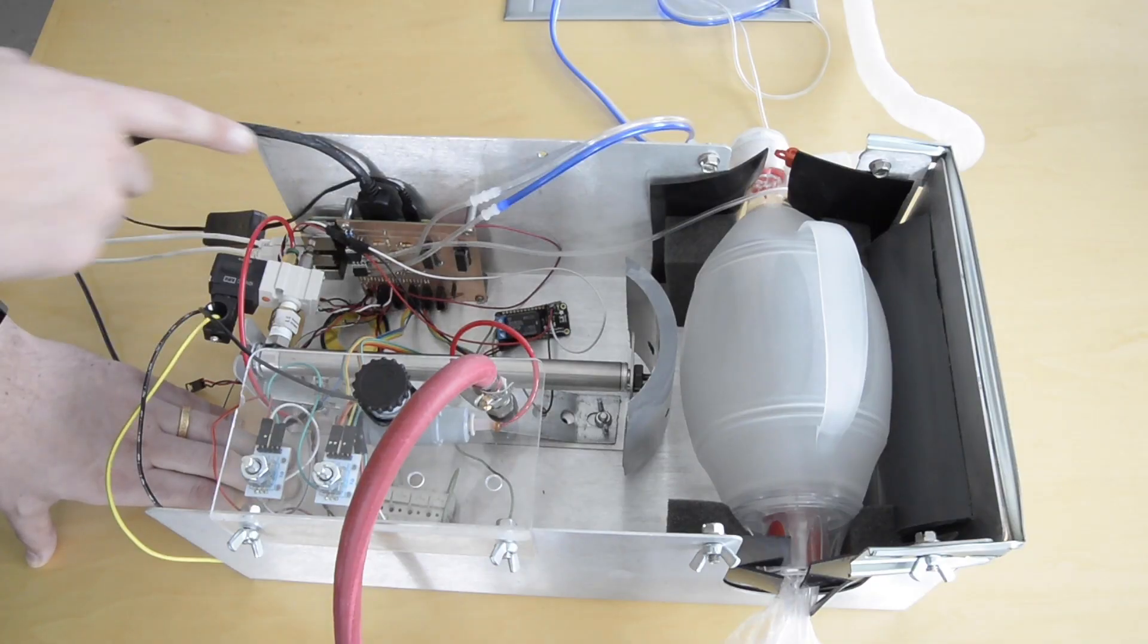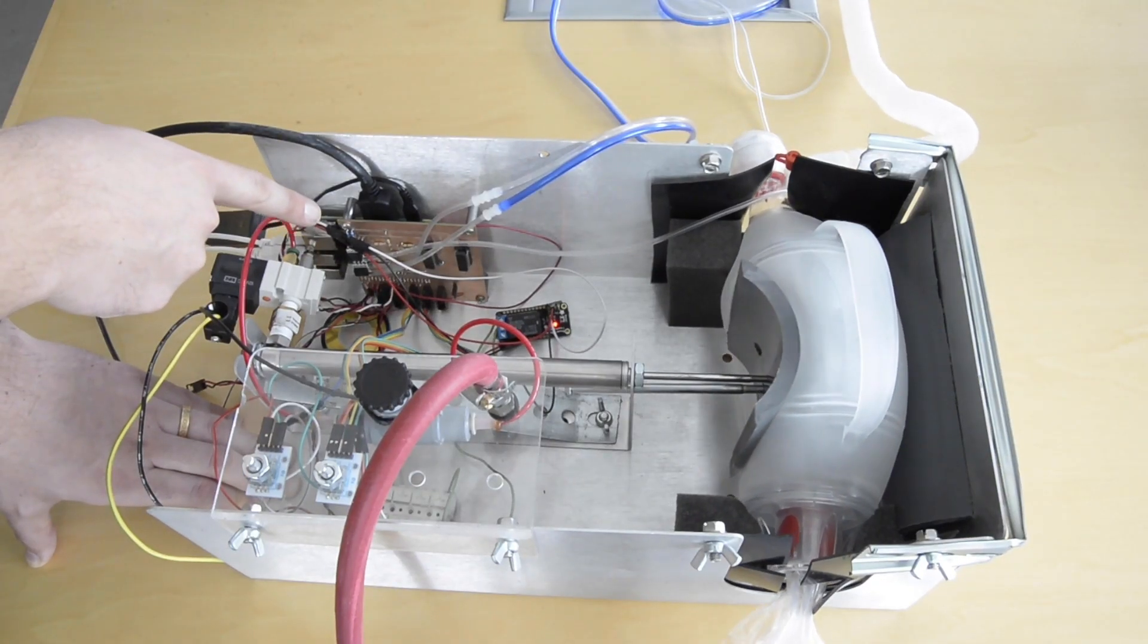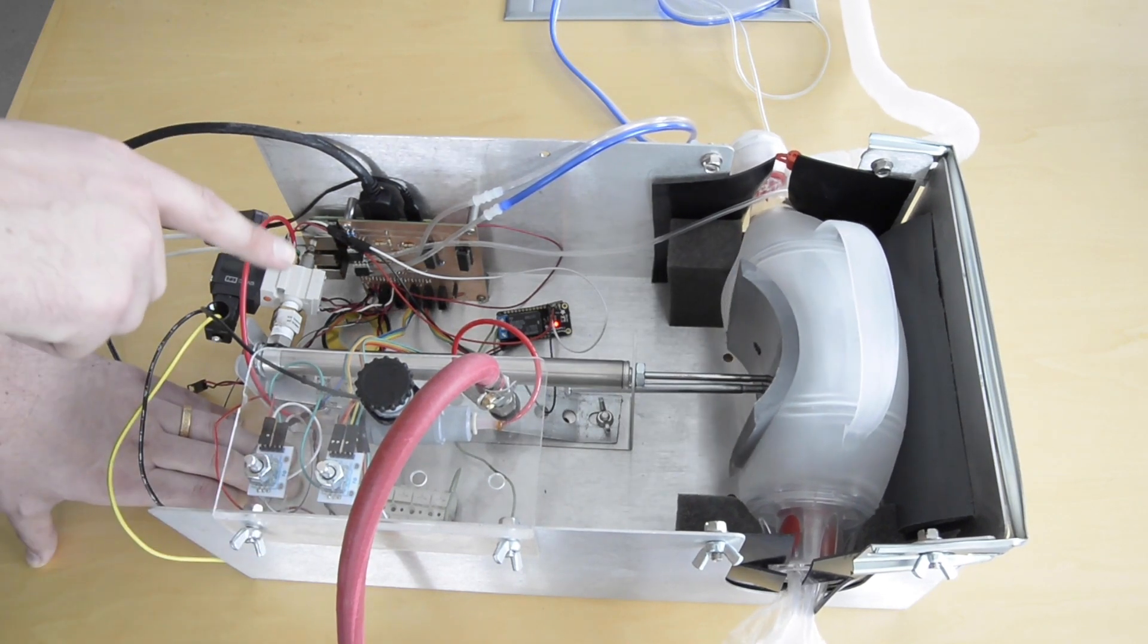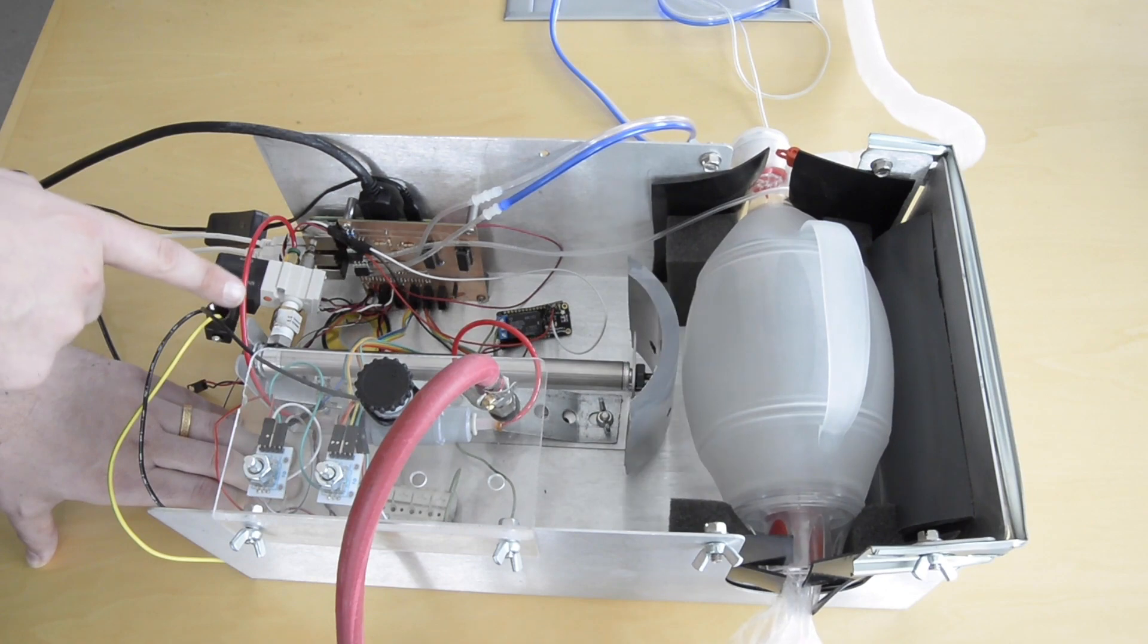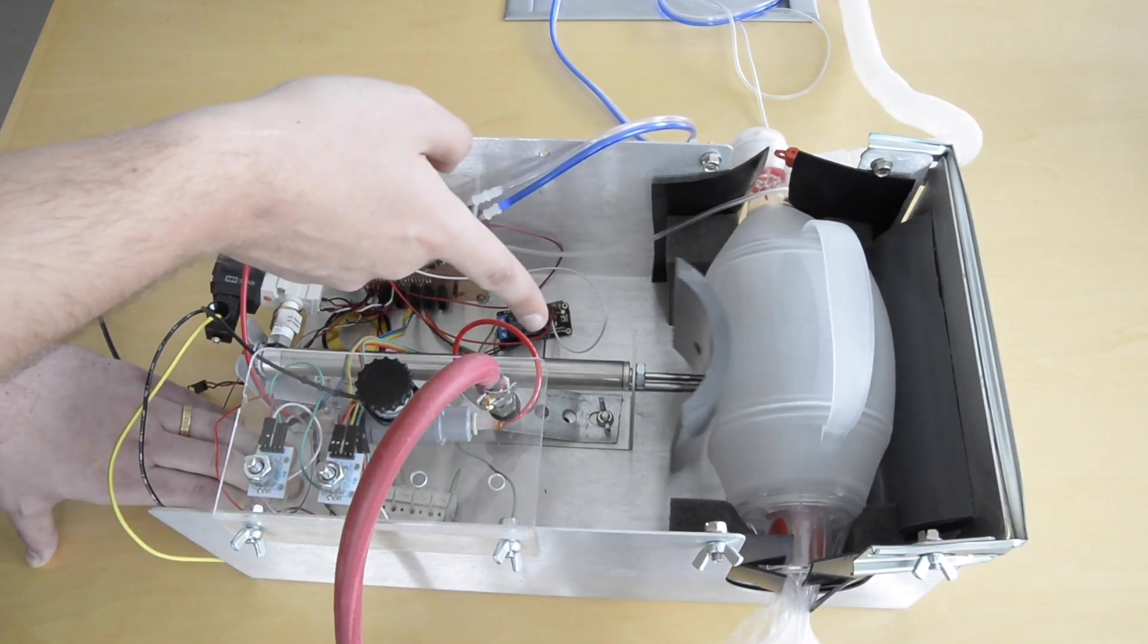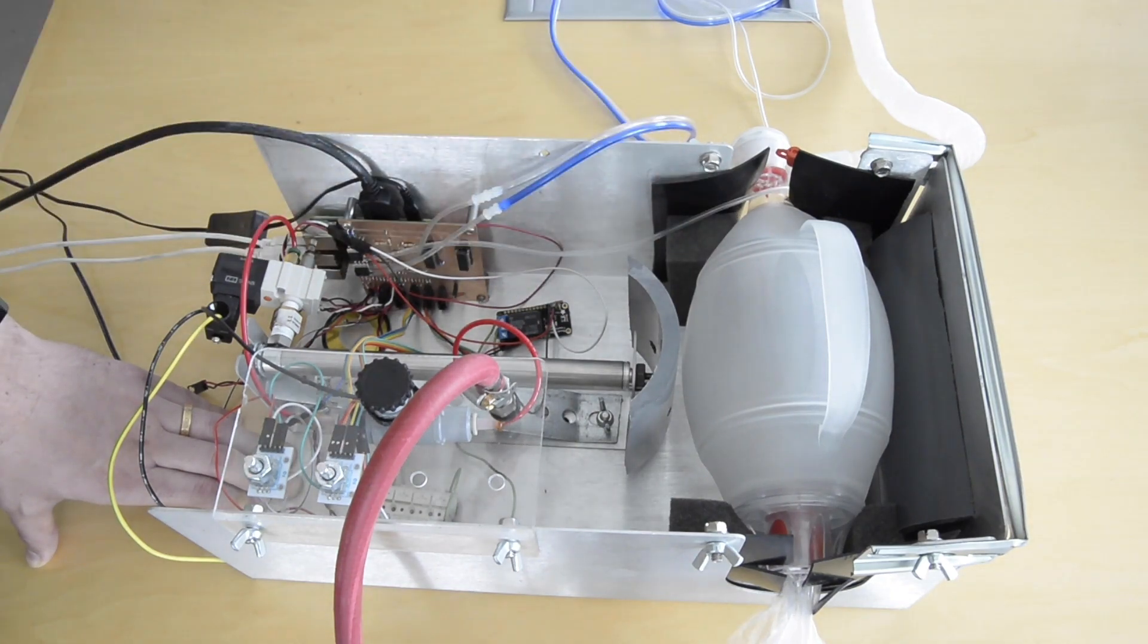The ventilator is controlled by a Raspberry Pi and custom breadboard. Inputs can be put in using encoders, and the ventilator is powered by using a compressed air line which goes into a piston which then compresses an ambu bag.